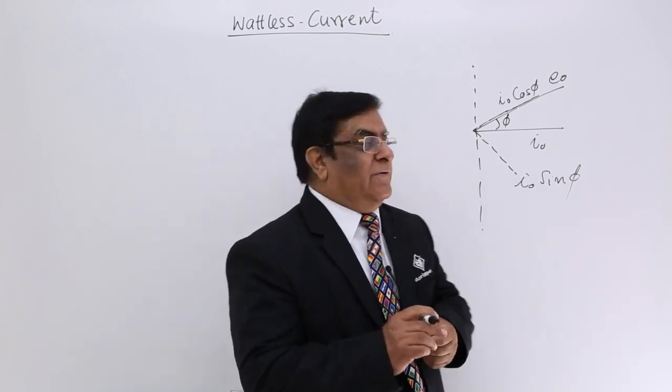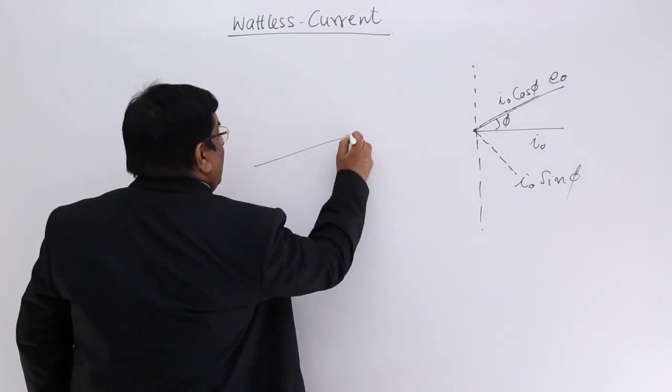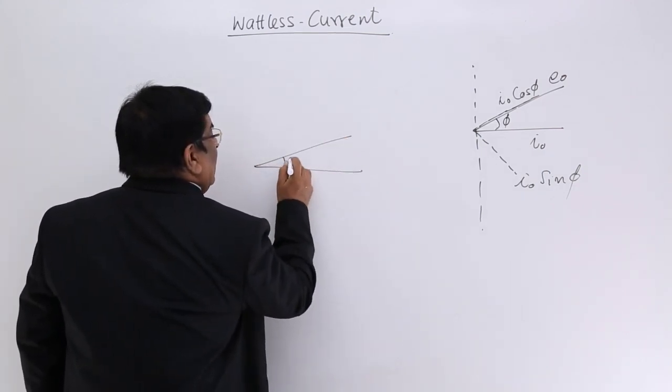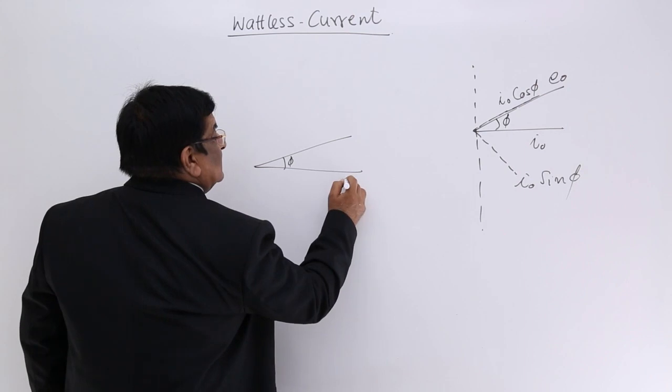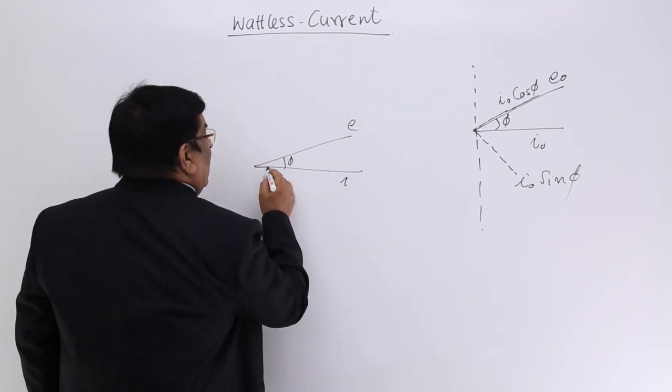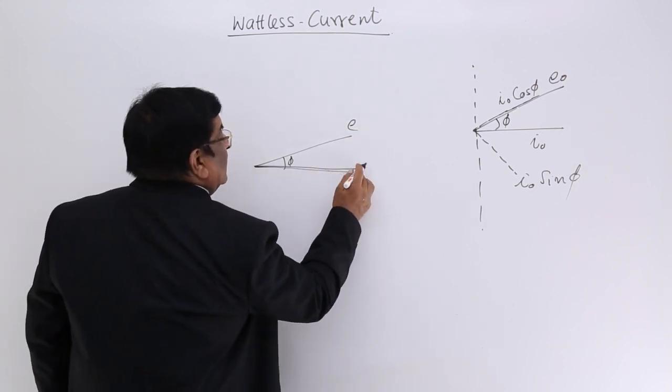Whenever we need to find power, you have seen in power factor that this is φ, this is I, this is E. Then E multiplied by I times cos φ.